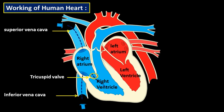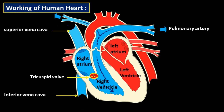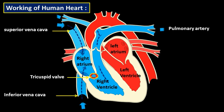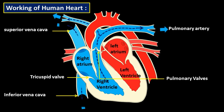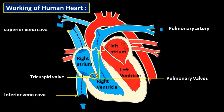The tricuspid valve opens only in the downward direction, so deoxygenated blood from the right atrium goes into the right ventricle. Due to the contraction of ventricle muscles, the blood in the right ventricle is pushed forward to the lungs via pulmonary arteries for the exchange of carbon dioxide and oxygen. The pulmonary valves open only upward, so blood moves toward the lungs and does not return to the right ventricle.